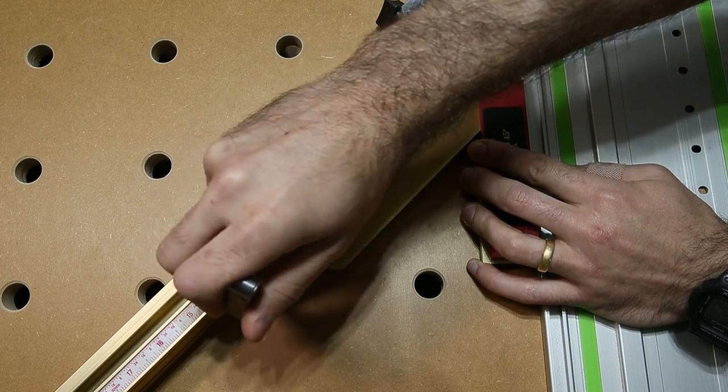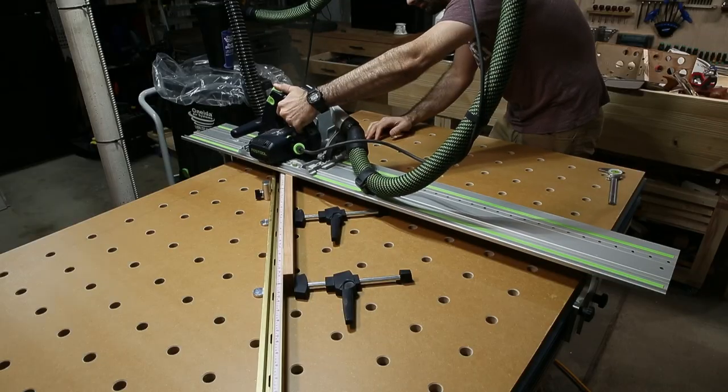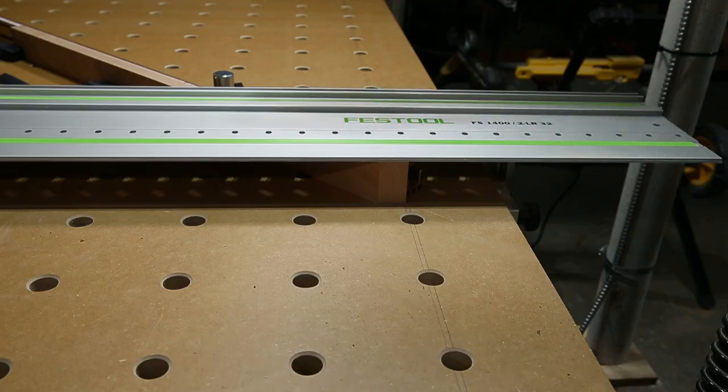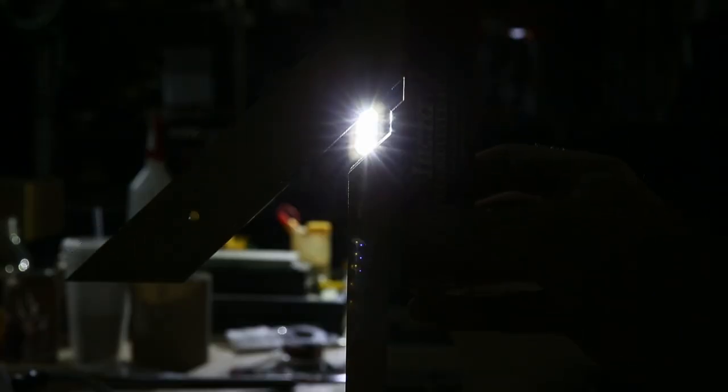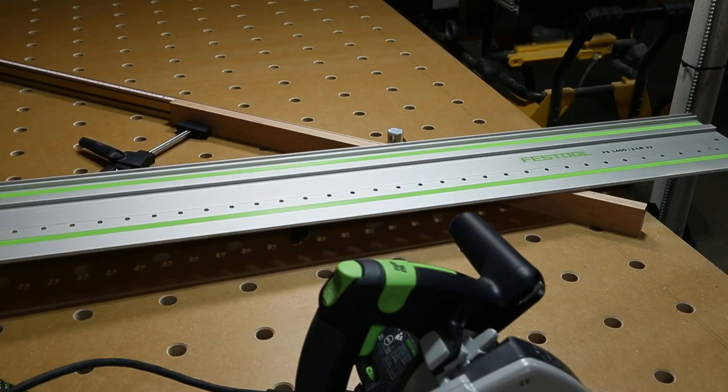I've set up my Incra fence here on the 45 and I'm going to make a test cut. This is actually the first cut on this table and I'll take it over to my workbench, put a light behind it, and compare it to my square here. It's a 45-degree square and it looks really good.